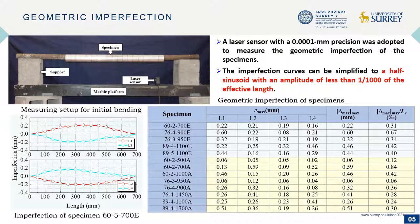Before the compression test, a laser sensor was employed to measure the geometric imperfection of the specimens. The results showed that the imperfection curves can be simplified to a half sinusoid with an amplitude of less than one-thousandth of the effective length.